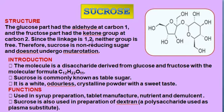Sucrose is the most common and familiar disaccharide, having the molecular formula C12H22O11. Sucrose is commonly known as table sugar — it is white, odorless, crystalline powder with a sweet taste. The glucose part has a free aldehyde group at C1 and the fructose part has the ketone group at C2, forming a 1,2 linkage. Neither group is free, so sucrose is a non-reducing sugar and does not undergo mutarotation.